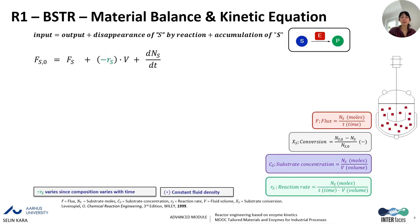Let's start with the BSTR, our model ideal reactor, and work with the material balance and kinetic equation. The material balance states: input is equal to output plus disappearance of the substrate by the reaction plus accumulation of the substrate. We write this based on the substrate flux in moles over time. So input flux equals output flux plus minus R_S multiplied by volume, where minus R_S is the reaction rate in moles over time, plus the change in substrate moles over time, which represents accumulation of the substrate.